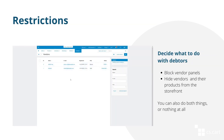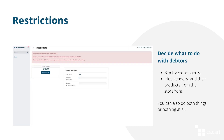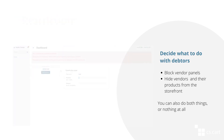Debtors will get the suspended status automatically. You can decide what this suspension involves. It can limit their vendor panel functionality, hide the debtor and their products from the storefront, do both these things, or nothing at all.